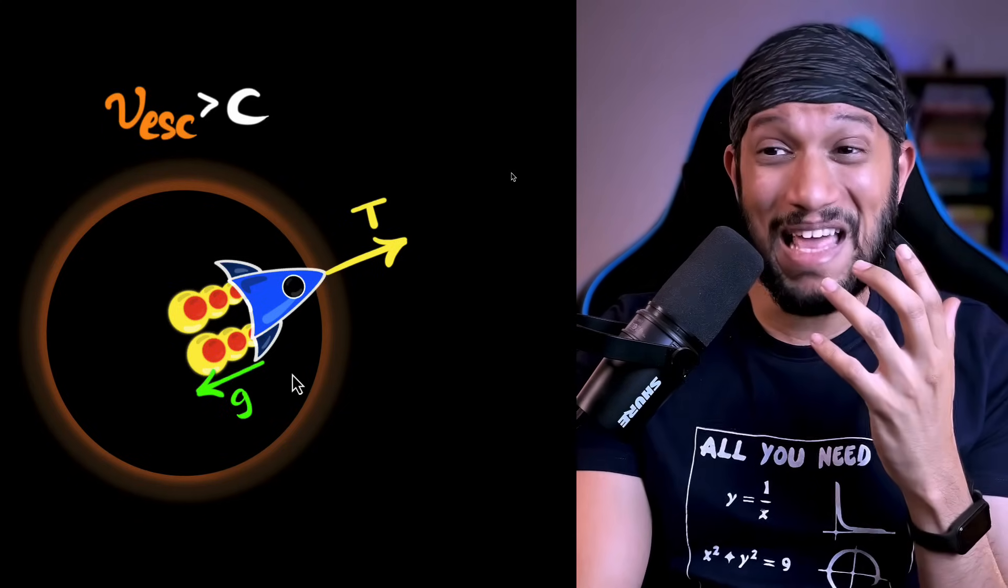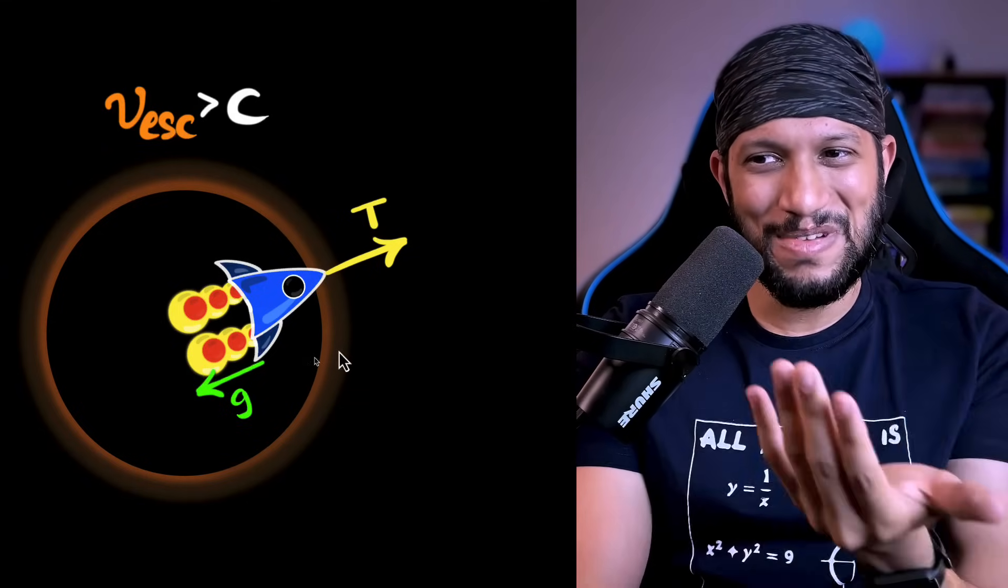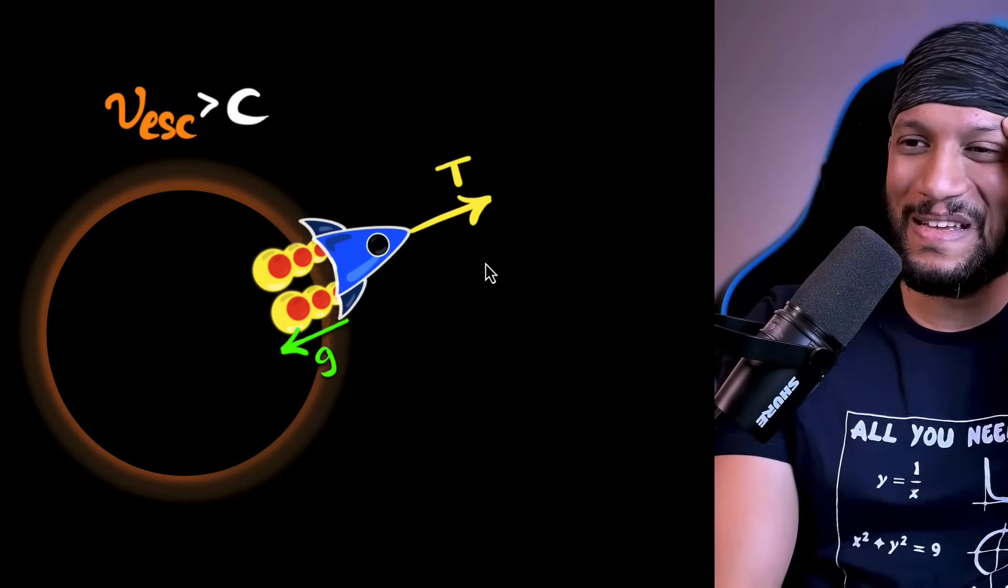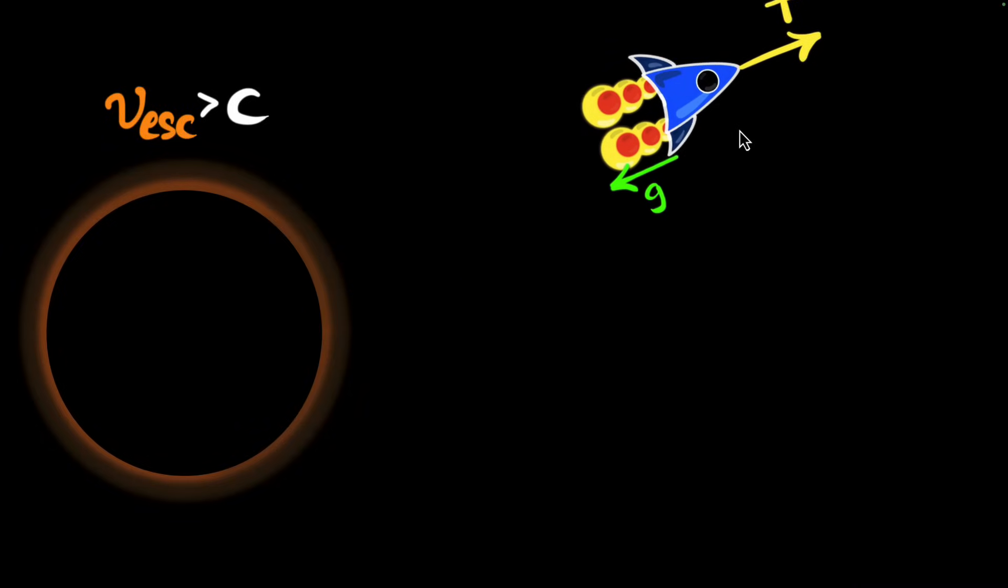Now, because rockets have their own thrust, there's also a thrust force acting in the opposite direction. Now, Einstein says, Mahesh, what if we make sure that the thrust force is always bigger than the force of gravity? What happens then? It will keep accelerating. That's right. If the thrust force is bigger than the force of gravity, it will keep accelerating forever, which means it can easily escape this black hole.